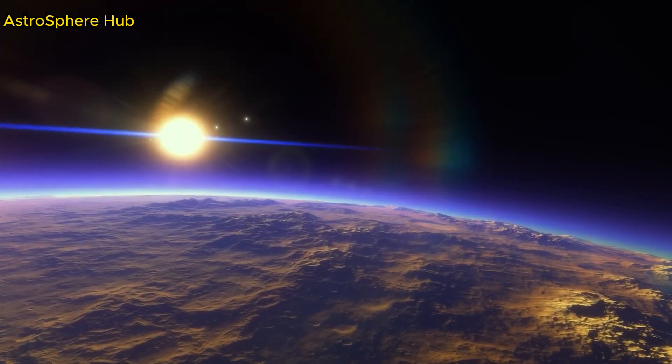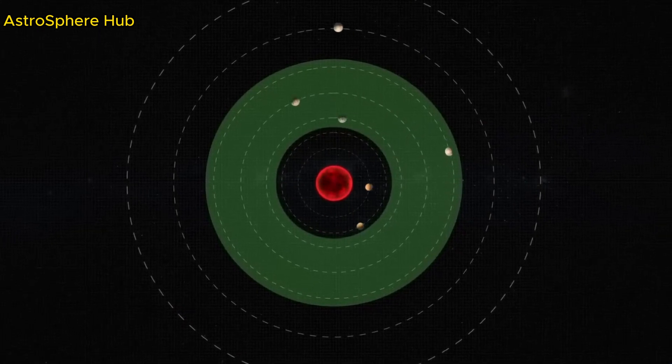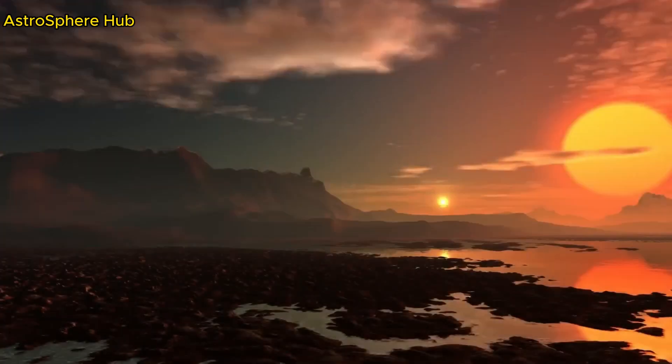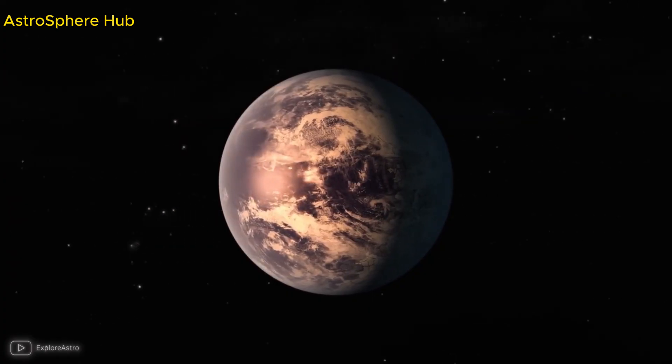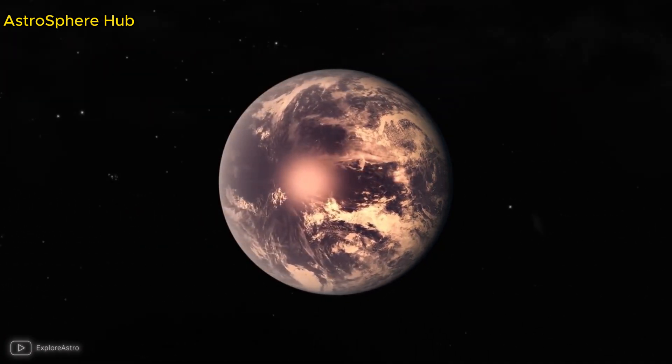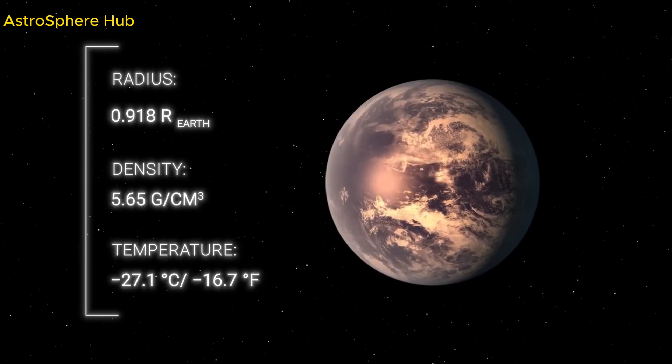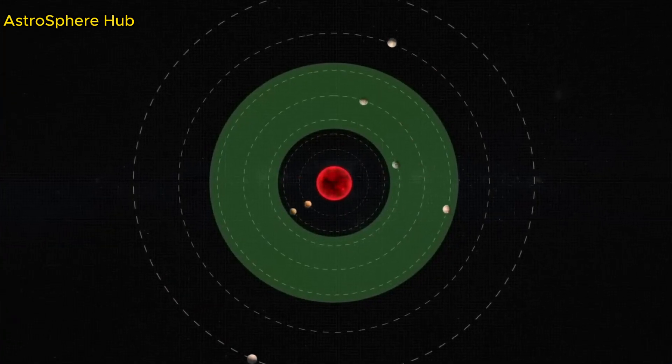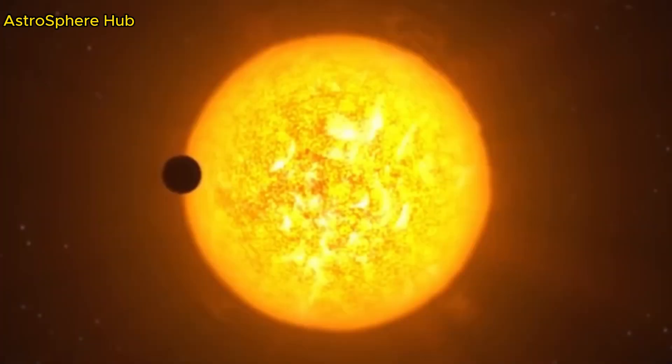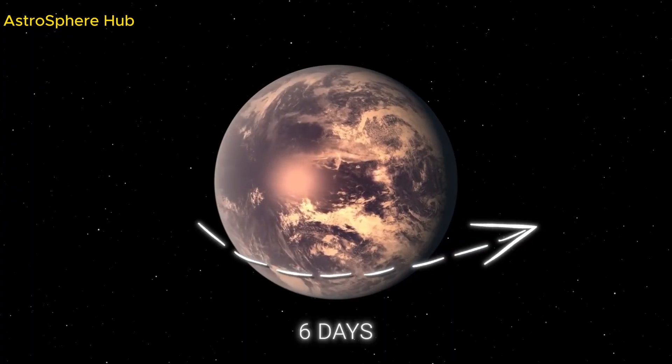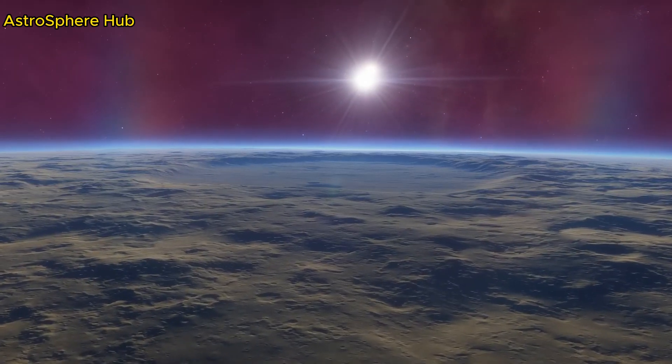Some scientists think that the flares from the TRAPPIST-1 star might actually be helpful for life on the nearby planets. These flares give off a lot of energy, and that energy could have kick-started the creation of important molecules like amino acids, which are building blocks for life. So while the high-energy radiation from flares could be harmful and maybe even sterilize a planet's surface or strip away its atmosphere, it could also provide the extra energy needed for early forms of life to develop.